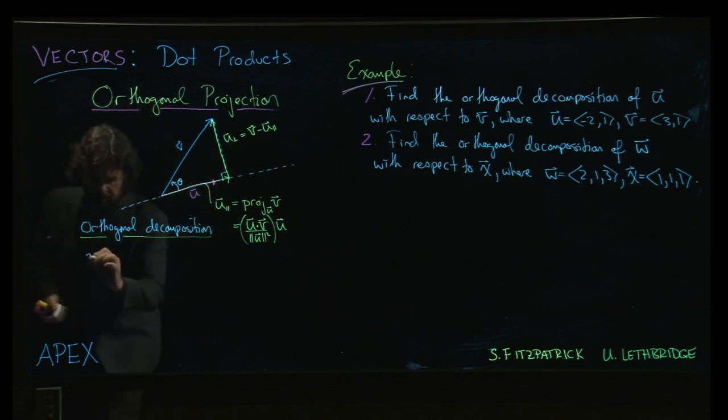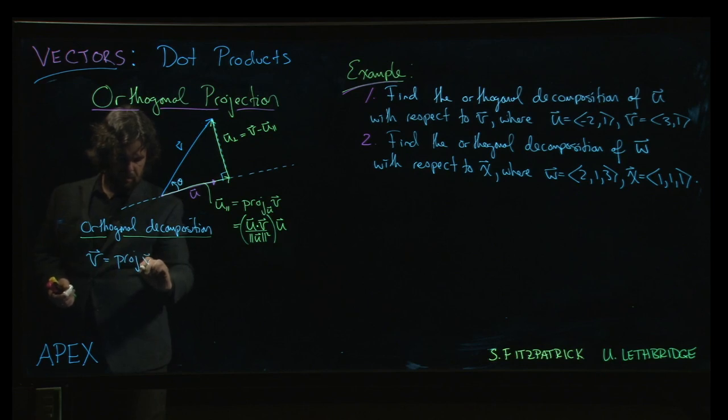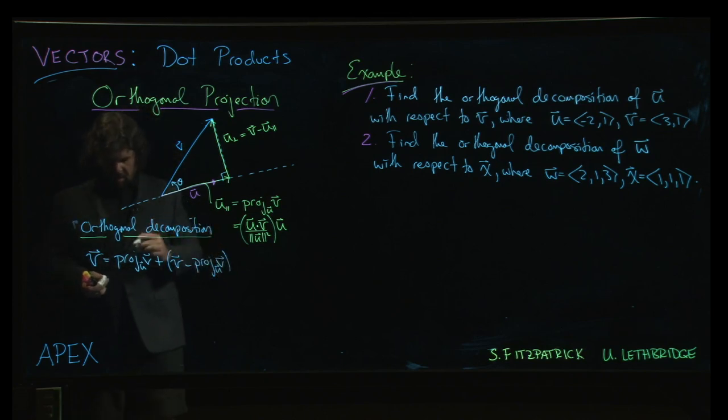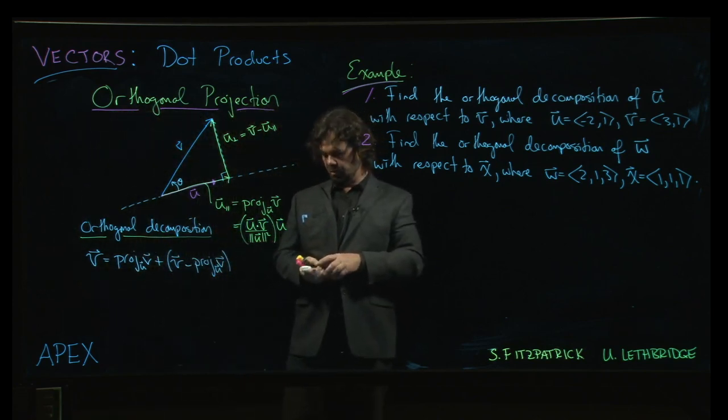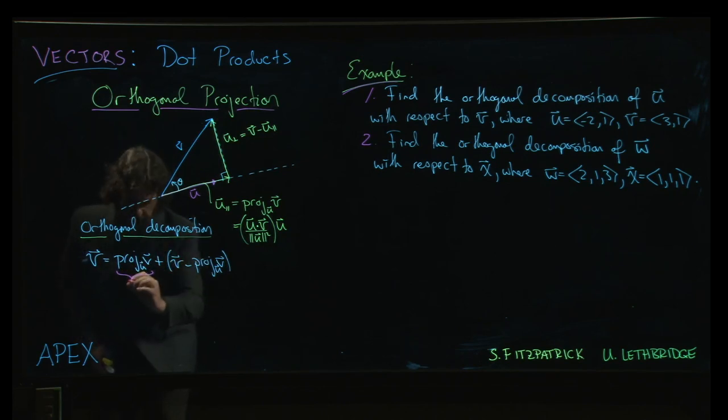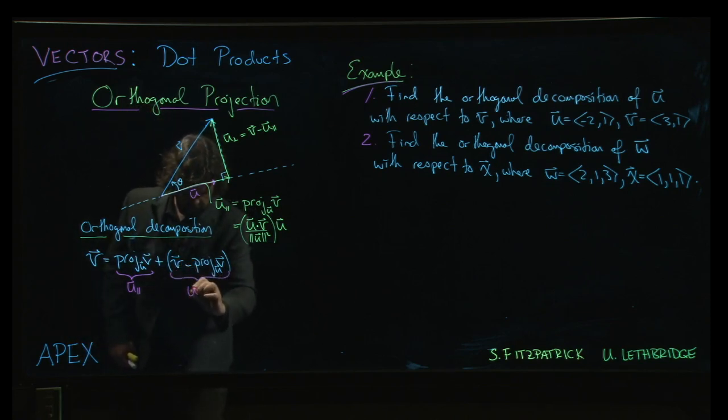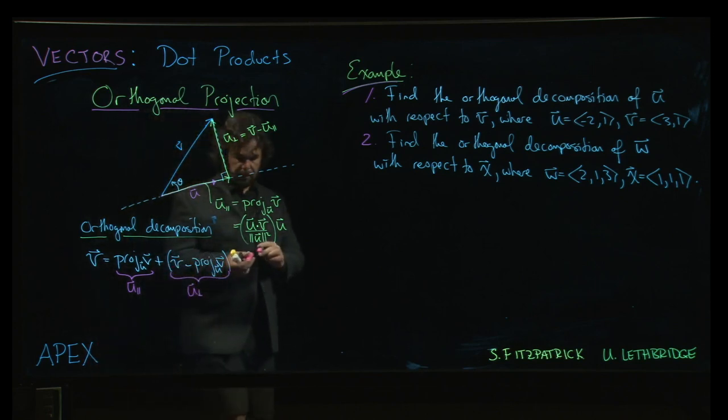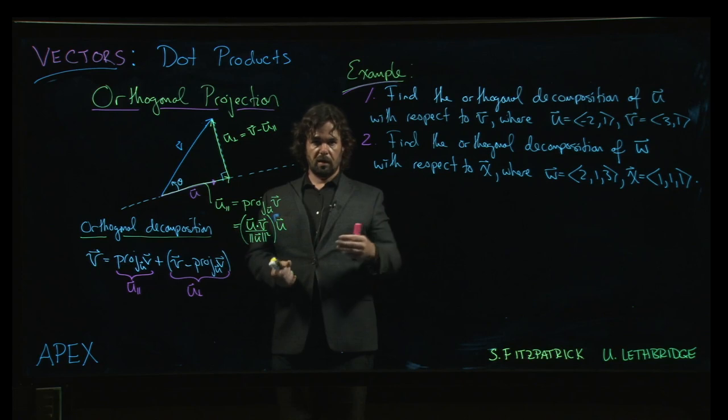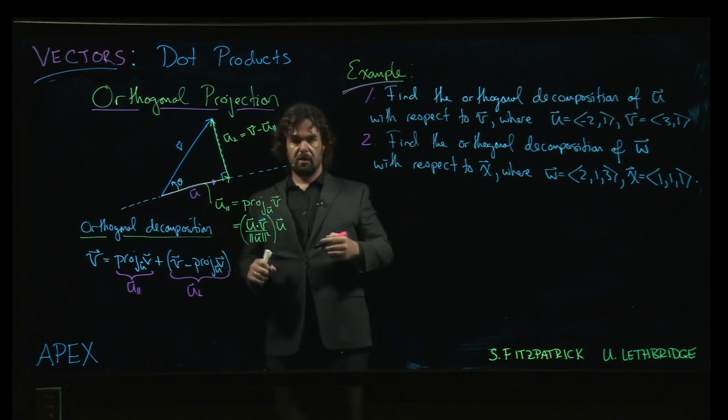The idea is that you can take your vector v and you can write it as the projection of v onto u plus v minus the projection of v onto u. That maybe seems a little bit silly at first, you're just adding and subtracting the projection. But the point is that this is the parallel vector, parallel to v, and this part here is orthogonal, the perpendicular part. It's often quite useful to be able to take a vector and split it into those two pieces. A lot of physics problems like component analysis of forces depends on these sorts of decompositions.